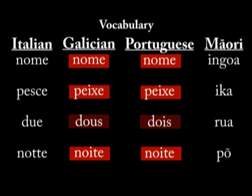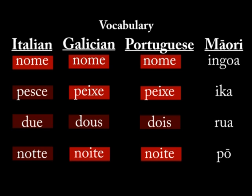We have good grounds for considering that Portuguese and Galician are very closely related. We also have grounds for saying that Italian, Portuguese, and Galician are less closely related, but they're all related to each other. As long as we group Galician and Portuguese more closely together, we can say that Italian, Galician, and Portuguese are all related to each other. Maori, on the other hand, doesn't seem to be related at all, so we'll set it to the side and say that it's an unrelated language.